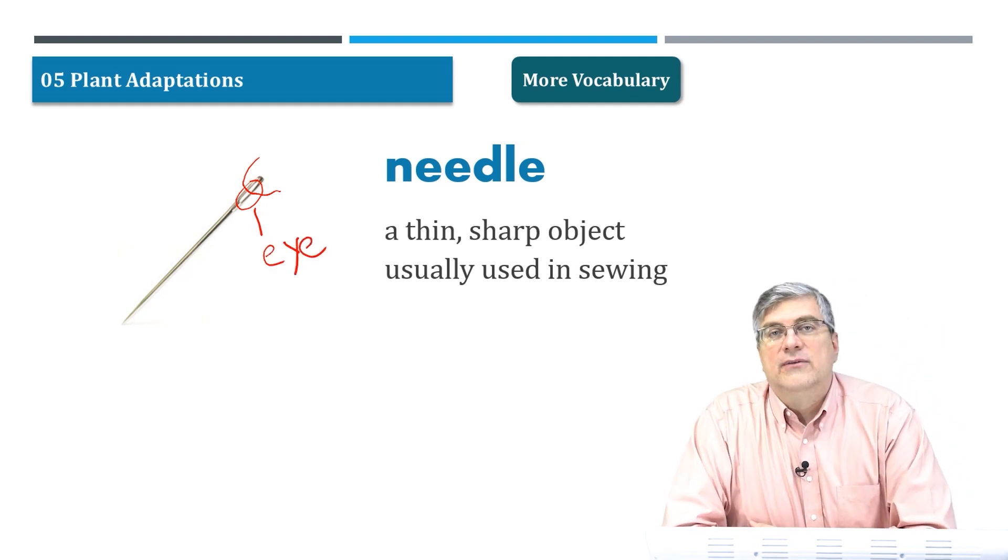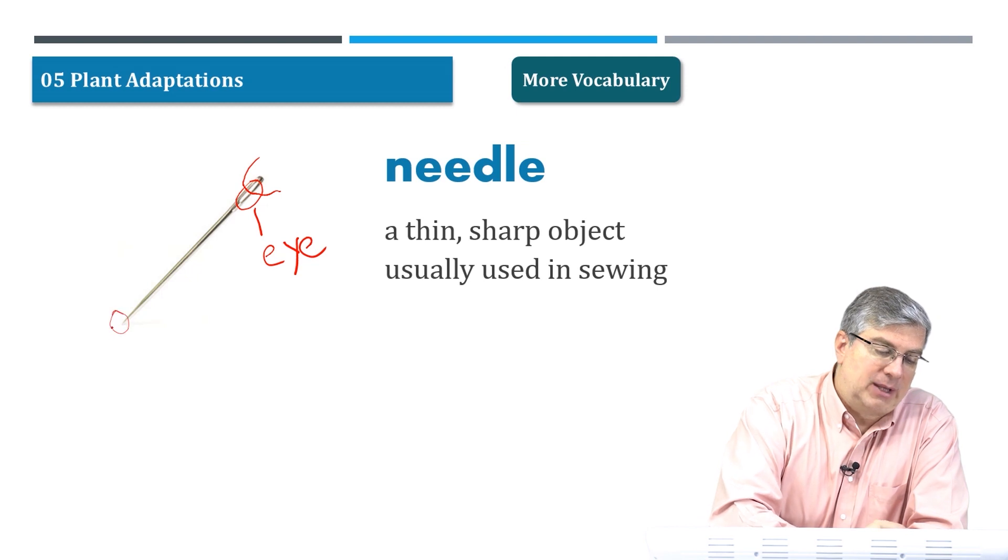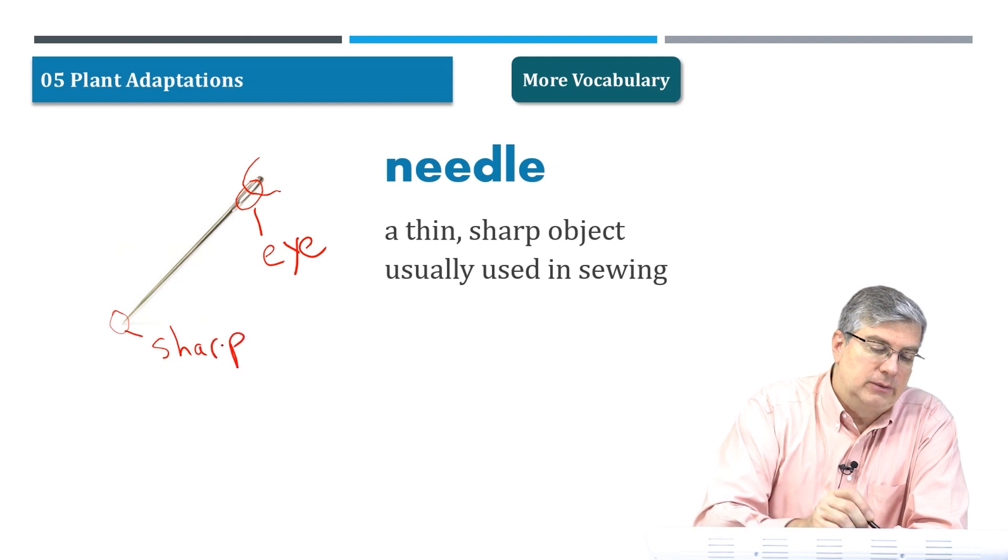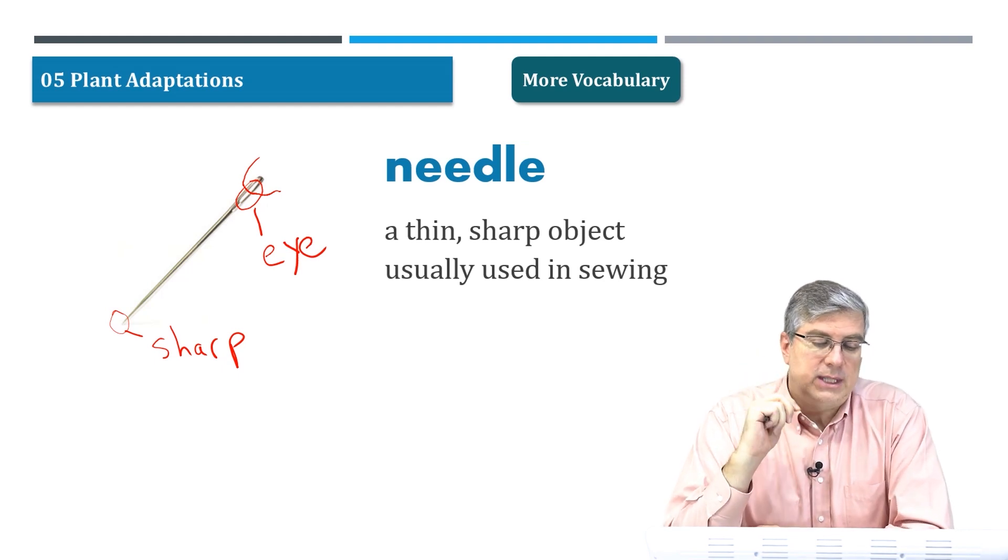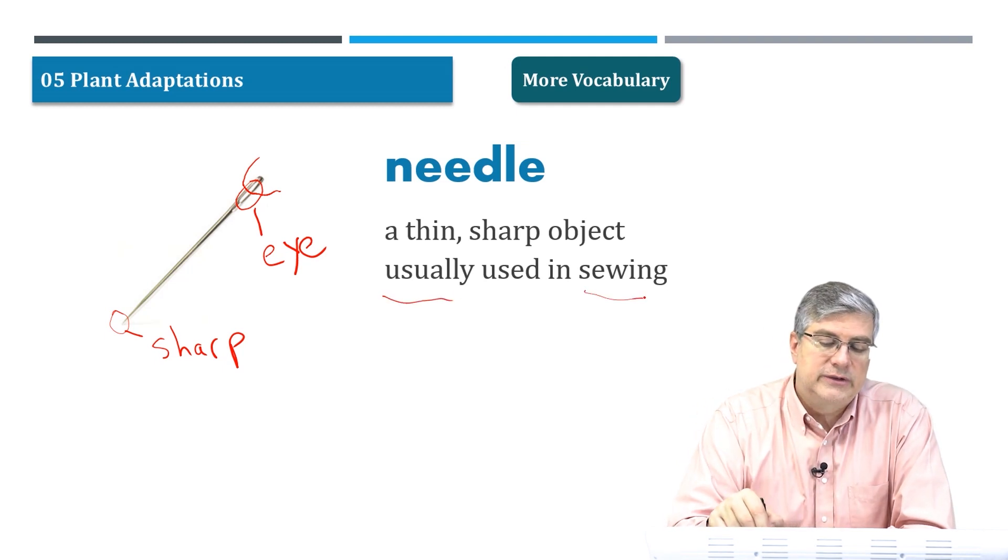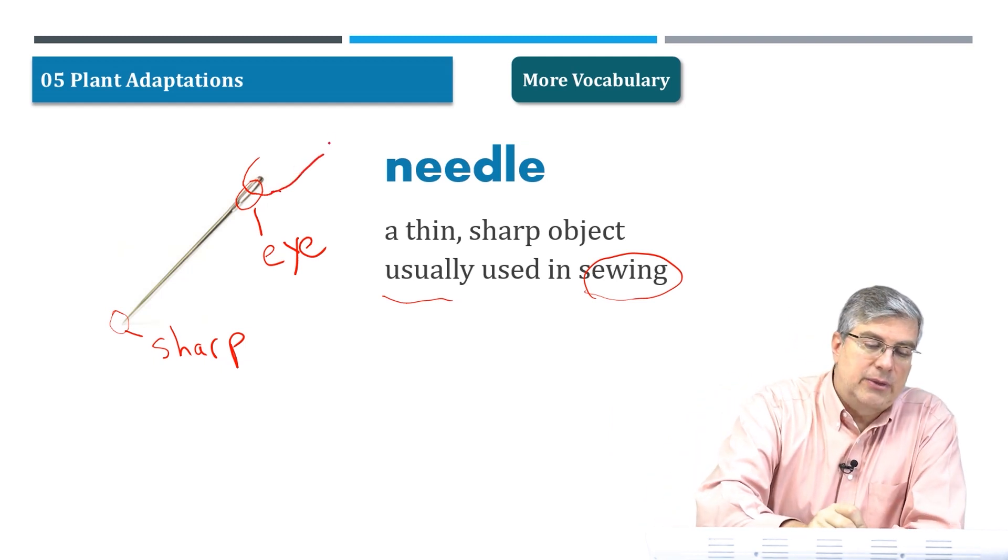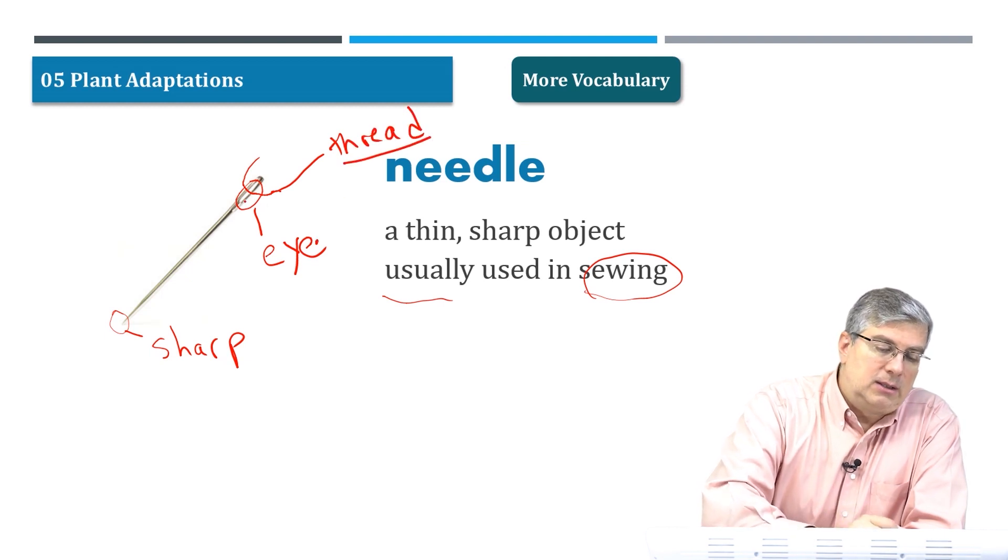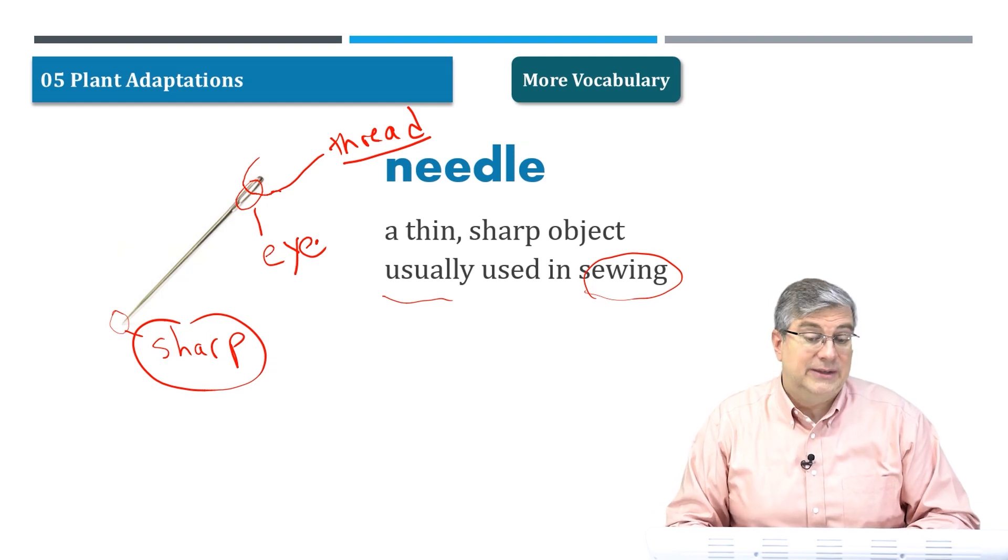The eye of a needle. A needle of course is thin and sharp. Be careful, this is a sharp point that's dangerous. Be careful with needles, it can enter your skin and ouch it hurts. It's a thin sharp object usually used in sewing. You put the thread through the eye of the needle and you use the sharp end to poke through the cloth and you can sew up a hole in your clothing.